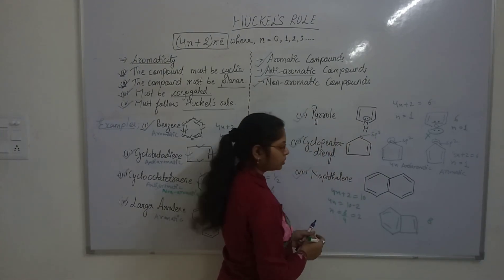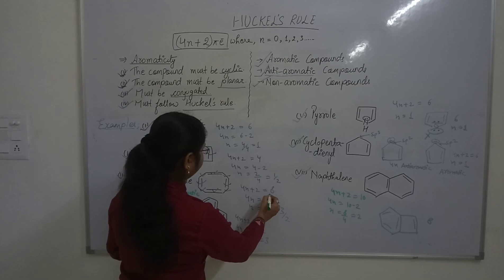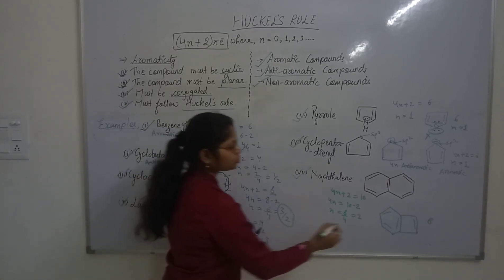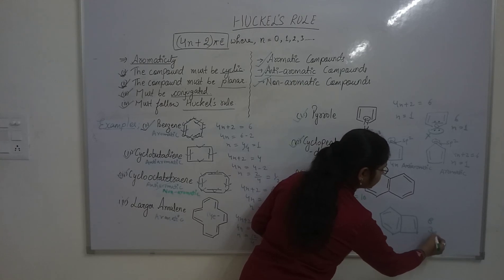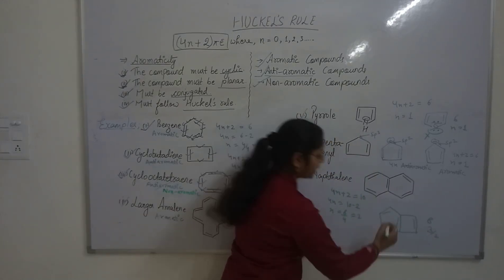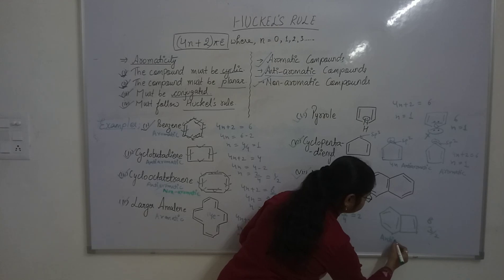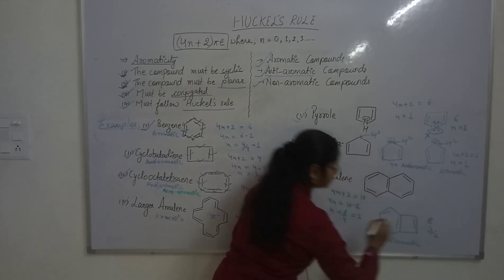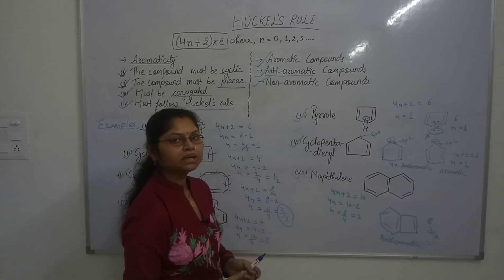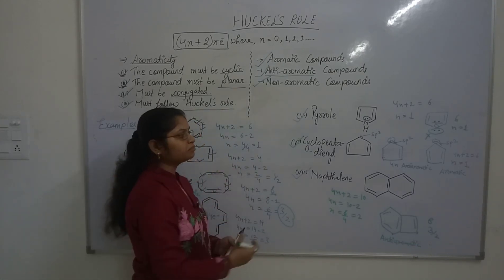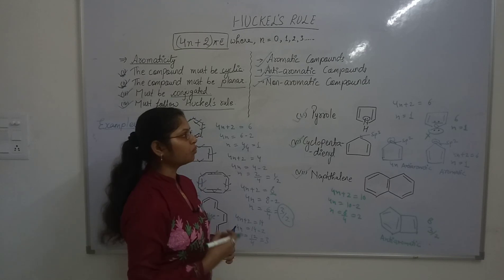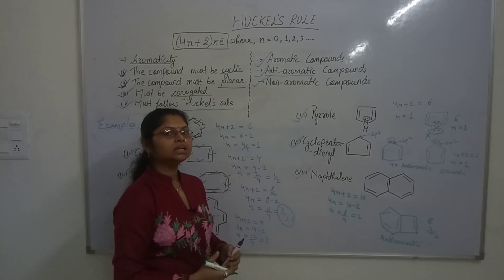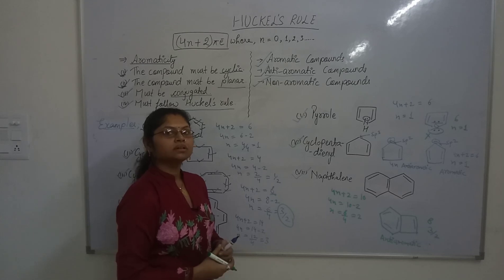For 8 pi electrons, as already calculated for cyclooctatetraene, the value of n comes out to a fraction. So this fused ring with 8 pi electrons is anti-aromatic. These examples should clarify for students what aromatic, anti-aromatic, and non-aromatic compounds are. That is all for this lecture — thank you.